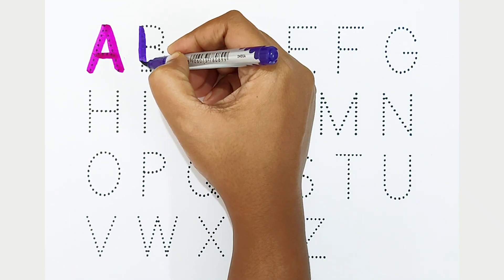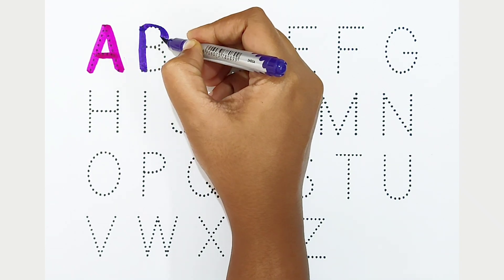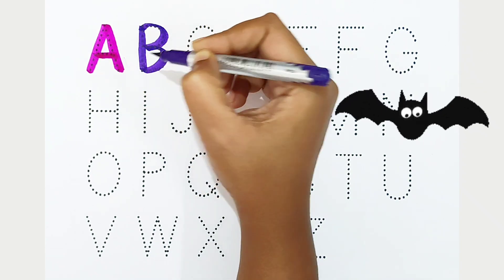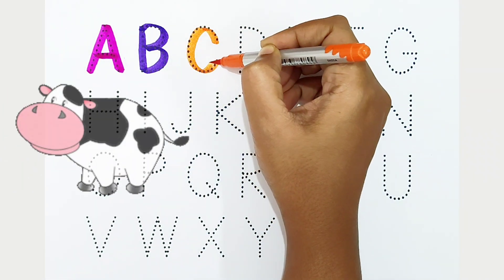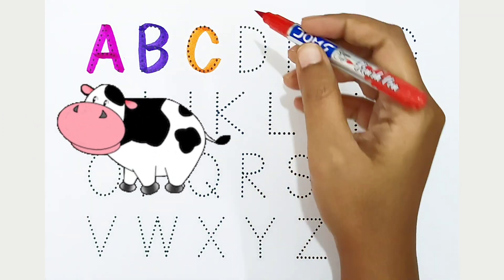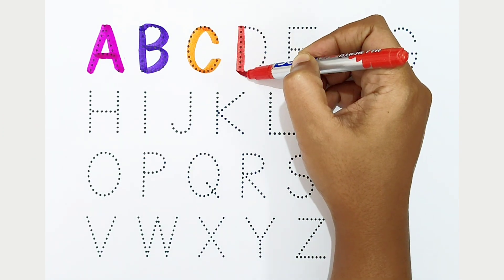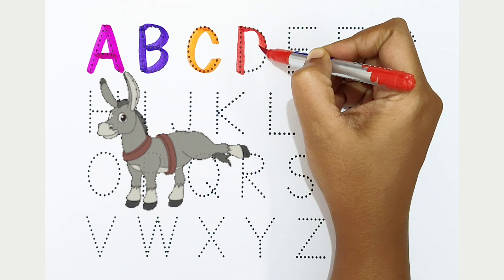B is for bat. C - orange color. C is for cow. D - red color. D is for donkey.